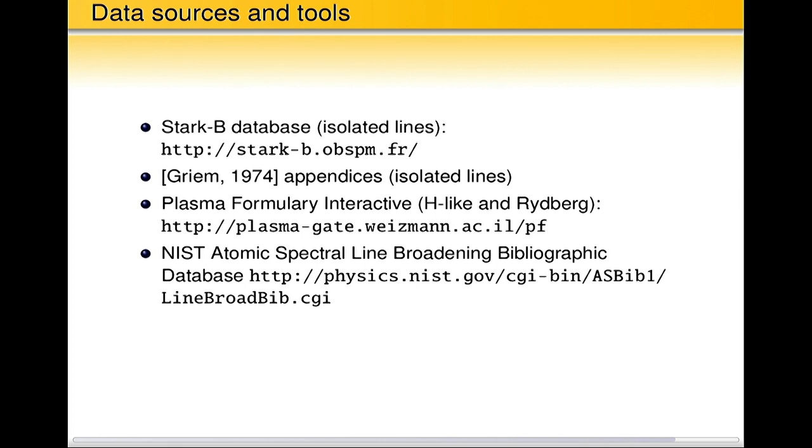I wanted to mention data source when you can find pre-computed or you can compute line shapes. So one is Stark-B database, which is for isolated lines. There are quite a few species and transitions. It's nowhere complete, but it's a large database. So probably you should start, if you need to find a Stark broadening for isolated line, you should go to this point.